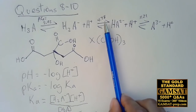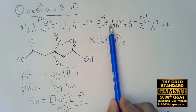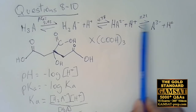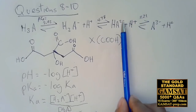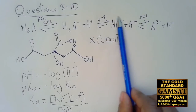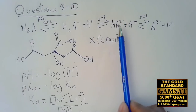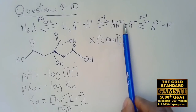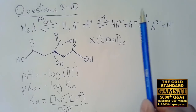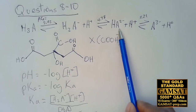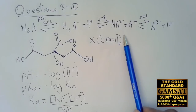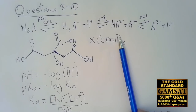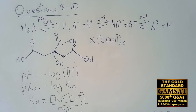The pKa is the pH when those two forms are in equilibrium, so the pH in between means this is the predominant species — the one with a minus two charge. That means two protons were given off. Looking at the answer choices: choice A is neutral, B has minus one, and C is minus two with two carboxylate anions.